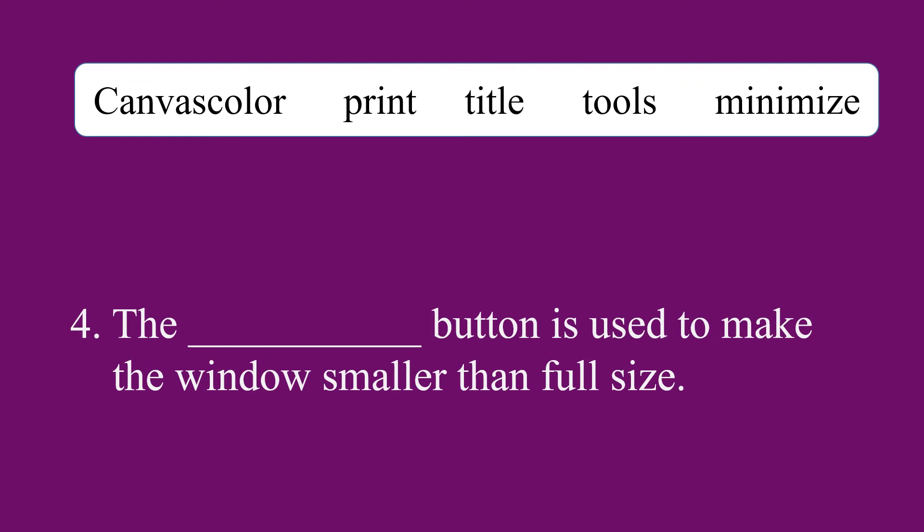Question number 4. The blank button is used to make the window smaller than the full size. What will be the answer? Answer is minimize. The minimize button is used to make the window smaller than the full size.